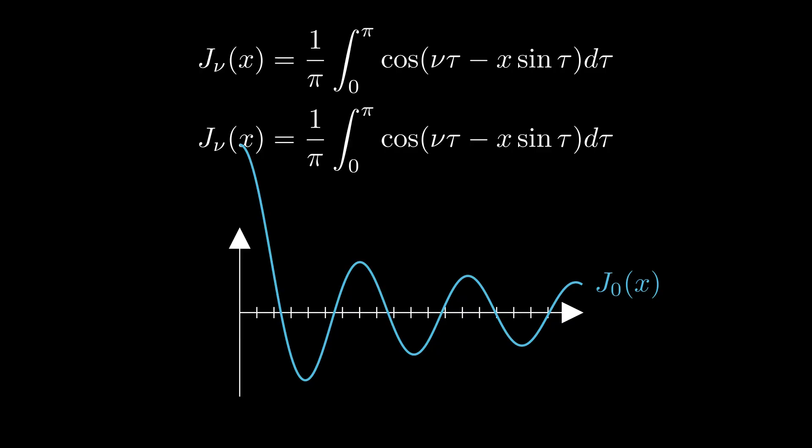The result: the Bessel function describes vibrations, electromagnetic waves, and solutions to radial heat equations when we're talking about oscillatory and cylindrical problems. Whenever we have a physics problem, when we're looking at it from an oscillatory or spherical or cylindrical angle, we're going to want to apply Bessel functions if we have symmetry because that will help us easier solve the problem. Sometimes the answer cannot be found using elementary functions.